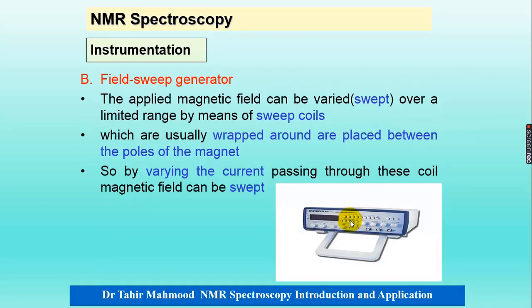The second component is the field sweep generator. Because we have two modes — we can vary field strength or frequency — the applied magnetic field can be varied over a limited range by means of coils usually wrapped around the poles of the magnet. By varying the current passing through these coils, the magnetic field can be swept.